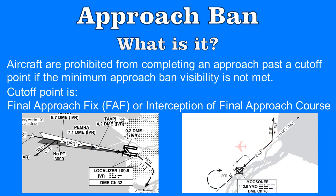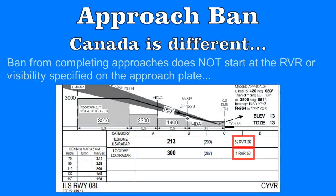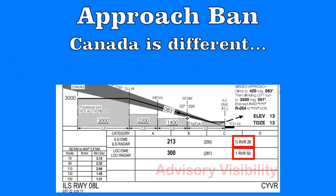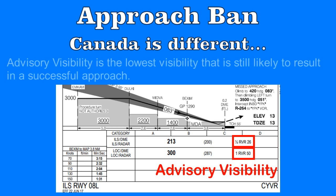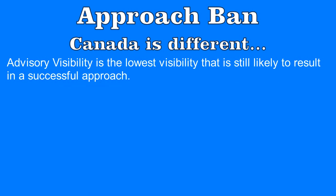What's different about Canada from most other countries in the world is that the approach ban does not normally start at the visibility published on the chart, but usually at a much lower visibility. Why would you shoot an approach below the specified visibility on the chart? When a visibility is published on an approach plate, this is an advisory visibility — the visibility that will most likely lead to a successful approach. However, it is conceivable that even if the visibility falls somewhat below this value, it is still possible to complete an approach successfully.